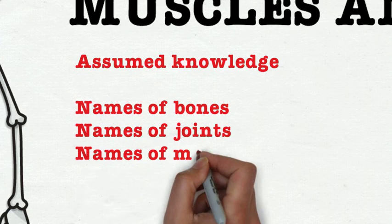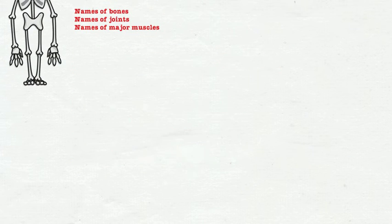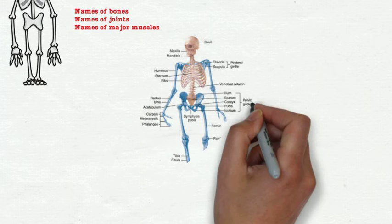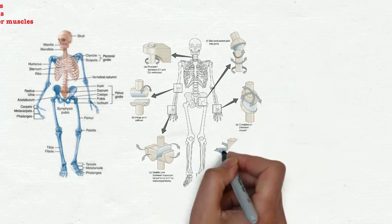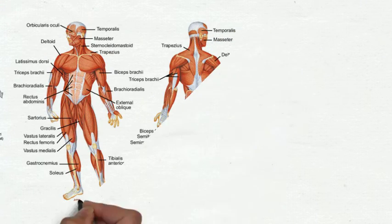So the assumed knowledge for this session is the names of the bones, the joints, and the major muscles. So if you just need to recap those, pause the screencast and have a look at the names of the bones there or the names of the joints.